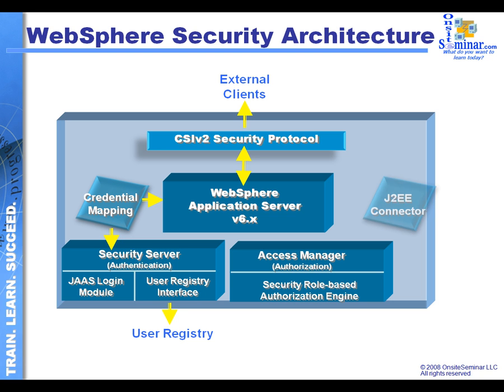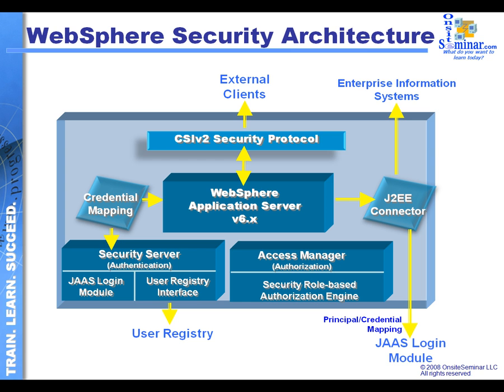We also have different kinds of connectors — a whole series of connectors that I can use to talk to enterprise information systems. We have a level of security that allows us to talk to EIS types of applications. When talking to EIS scenarios, this is one of the places we'd probably use the JAAS Login Module to allow us to do credential mapping and principal mapping. So we're going to be talking a bit more about connectors, about credential mapping, and about the concept of CSI v2.